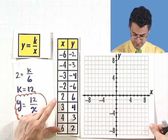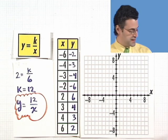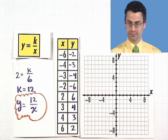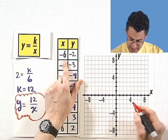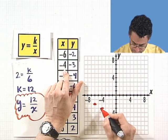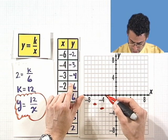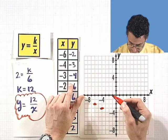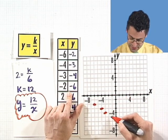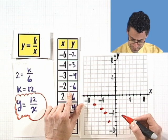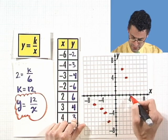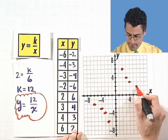Got to love the plot — next time you're reading a play and they ask what's the plot, you can say, well, where's the table of values? Alright, plotting: negative 6 comma negative 2, negative 4 comma negative 3, negative 3 comma negative 4, negative 2 comma negative 6. And jumping to the positive side: 2 comma 6, 3 comma 4, 4 comma 3, 6 comma 2.